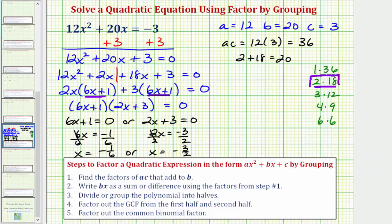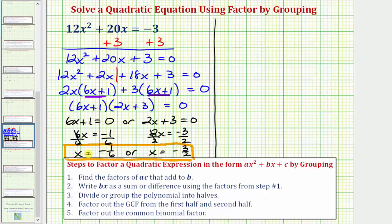So we have two solutions, x equals negative 1 sixth, or x equals negative 3 halves. These are the two values of x that would satisfy the given equation. Now let's take the time to verify these solutions by substituting these two x values into the original equation, to make sure the left side is equal to negative 3. But let's do this on the calculator.